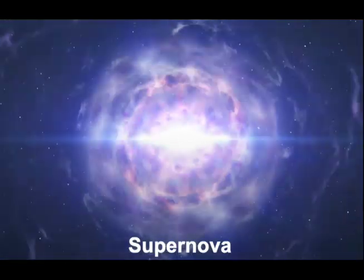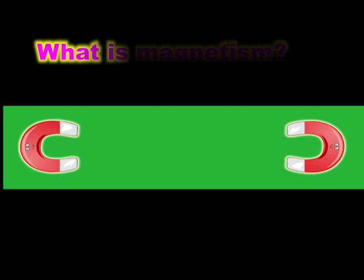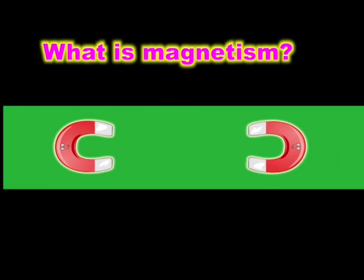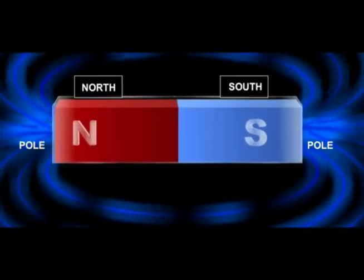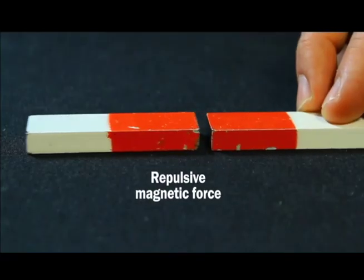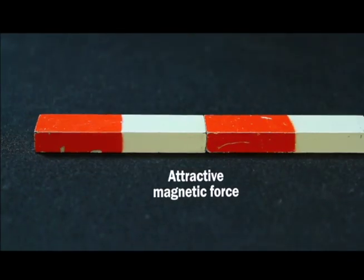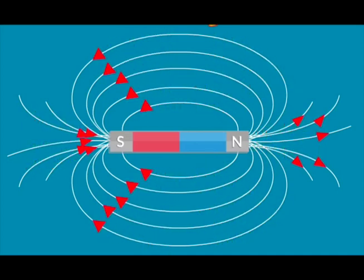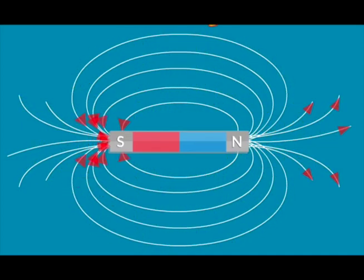Elements above iron are made when old stars explode. Iron can make magnets. So just what is magnetism? Magnets have two sides called poles. Some poles push apart, and different poles pull together. Currently, there is not a clear theory on how magnets work.